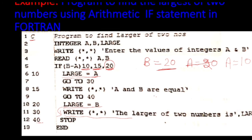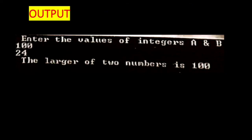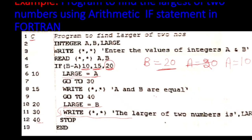Ab isme dekho, is expression pe depend karega — aapki B-A ki value positive hai, negative hai ya 0 hai. Agar maan lo B-A ke liye aap 100, 100 dono number enter karwate hain, to aapka kya print hoke aata — display mein aata: 'A and B are equal.'